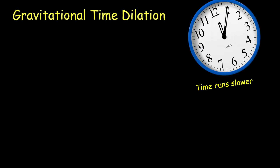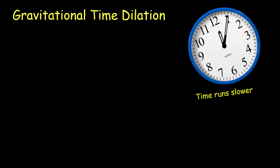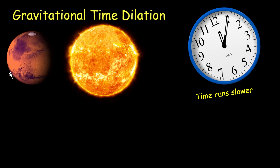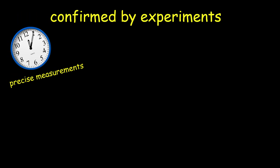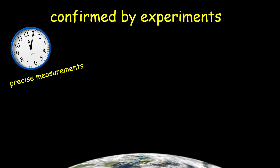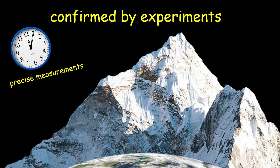Gravitational time dilation: time runs slower in stronger gravitational fields. Near a massive object like a planet or a star, time will pass more slowly compared to a region with weaker gravity. This effect has been confirmed by experiments, such as precise measurements of time on the Earth's surface versus higher altitude.